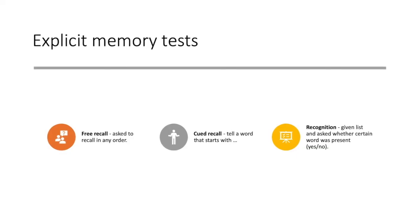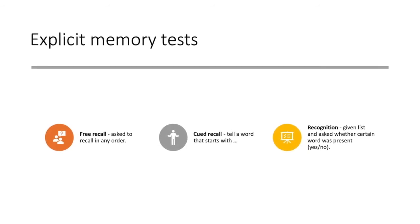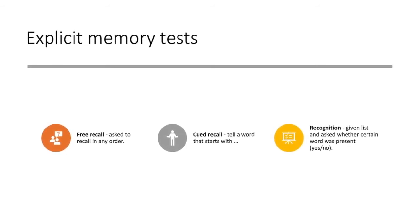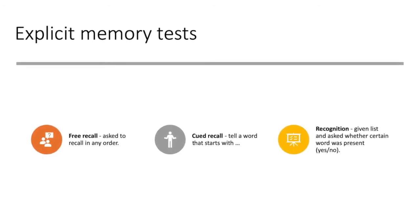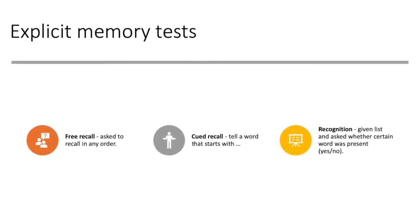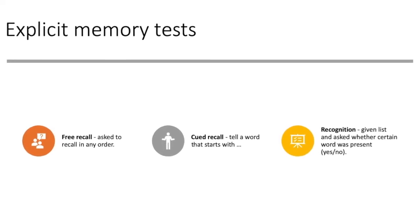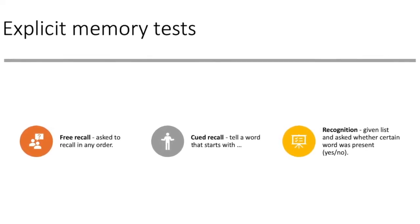Explicit memory tests include free recall, where participants are asked to recall in any order; cued recall, which begins with a word that starts with something; and recognition, where individuals are given a list and asked whether certain words were present, yes or no.